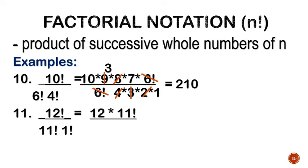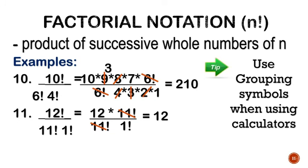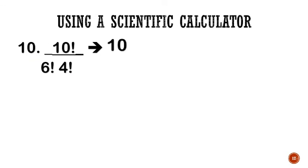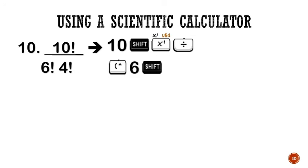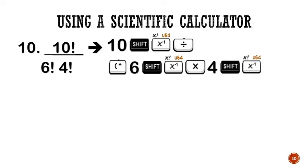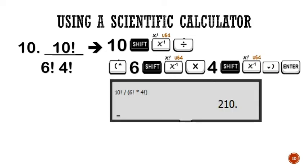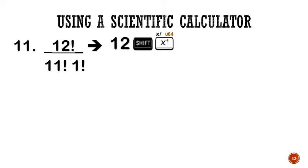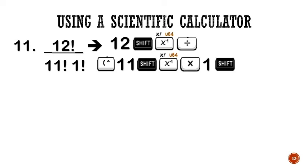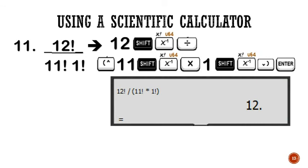For number 11, 12 times 11 factorial divided by 11 factorial times 1 factorial can be cancelled. We know that 1 factorial is 1, so the answer will be 12. Tip: use grouping symbols when using calculator. That's 12 shift factorial divided by open quantity 11 shift factorial times 1 shift factorial close quantity, then enter, and that will give us 12.